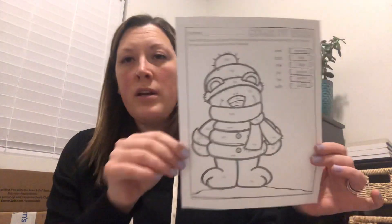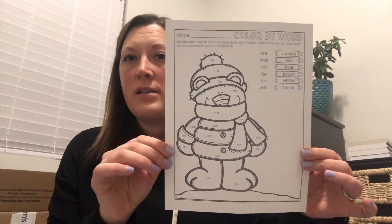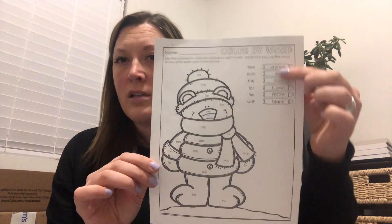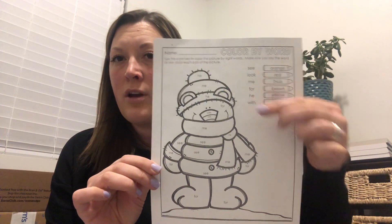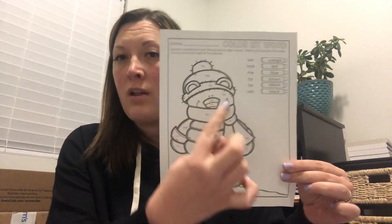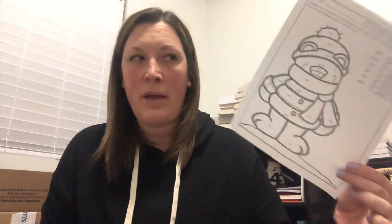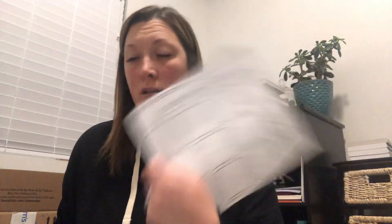Wednesday, you are going to do the color by word. Over here it shows the colors — you can ask your mom or dad to tell you what the colors are. When you see the sight word, you'll color the matching color and make that picture of the bear outside.